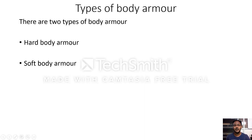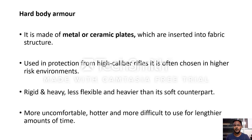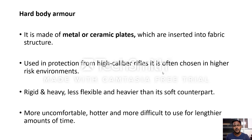Body armors are mainly classified into two types: hard body armor and soft body armor. Hard body armor is mainly made up of metal or ceramic plates inserted into a fabric structure. It is used for protection from high-caliber rifles and is often used in high-risk environments. Though it gives good protection from bullets, the material is very rigid and heavy — less flexible and heavier than its soft counterpart.